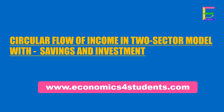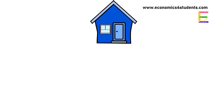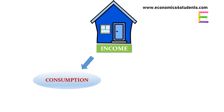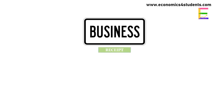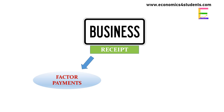In reality, households do not spend all their income on consumption. Instead, they pay part of their income on consumption and the remaining part they save for future use. Therefore, saving is a withdrawal from the circular flow of income between household and firm, since it reduces the flow of income in the economy. It is called leakage.